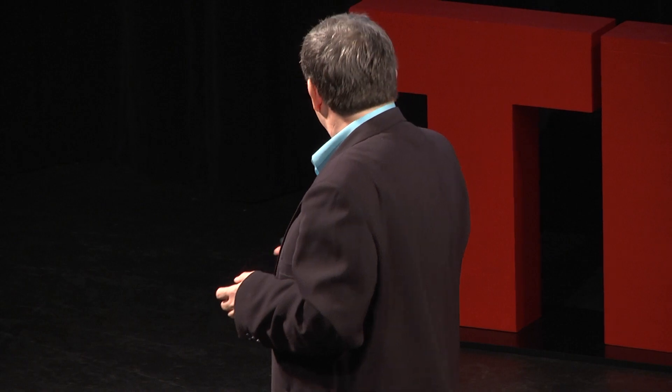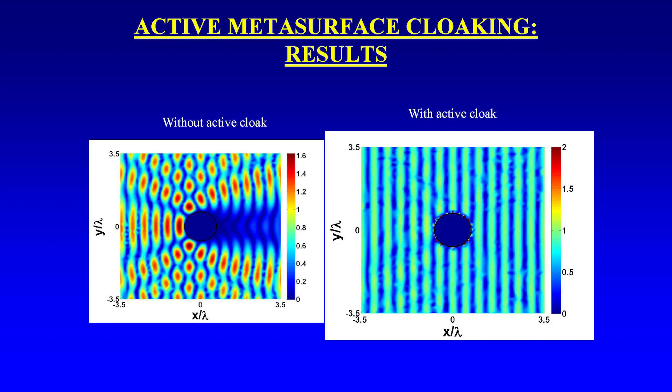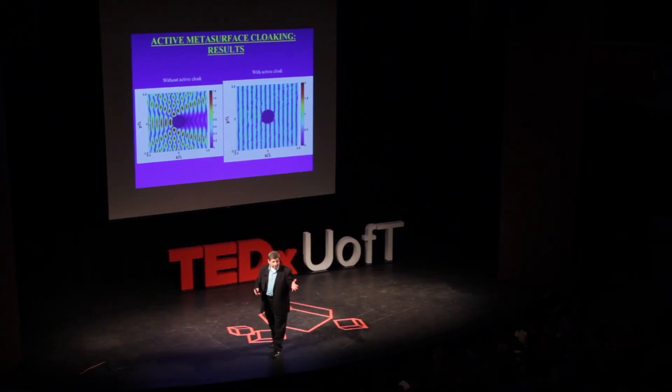It works really, really well. A wave comes from the left and hits the cylinder, scattering all over the place and creating a shadow region at the back. But when we switch on our active cloak, the wave just passes right through it as if nothing were there — the metallic cylinder literally becomes completely transparent and invisible.